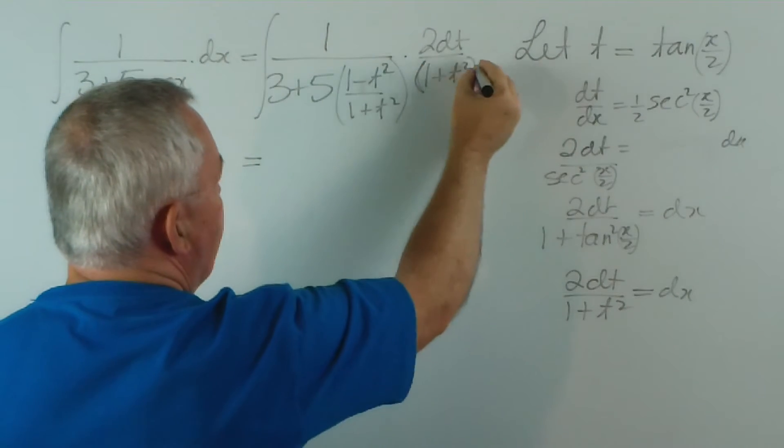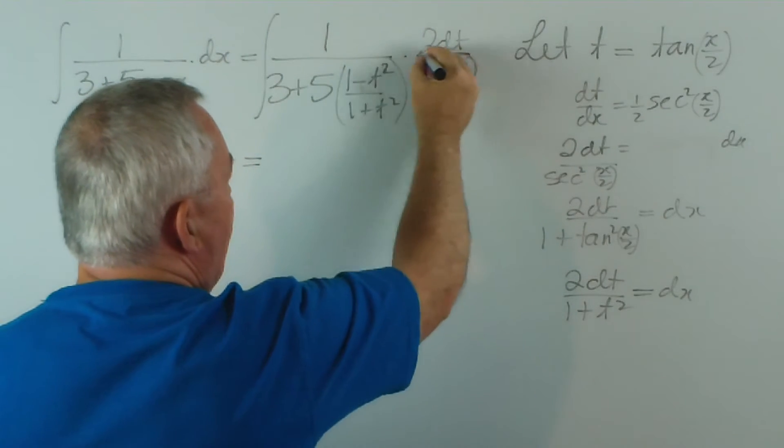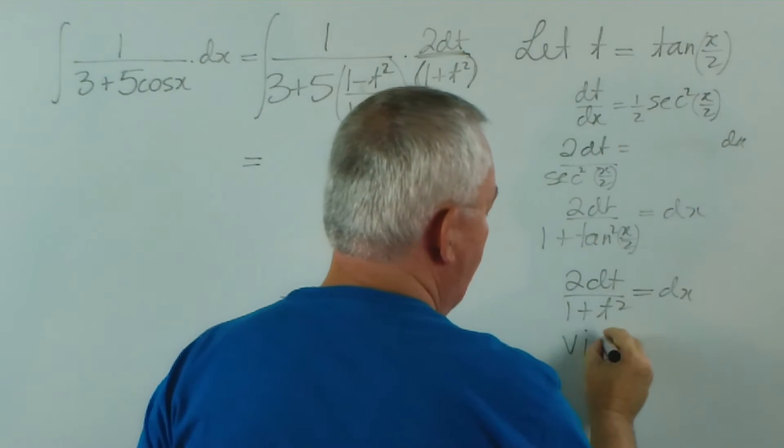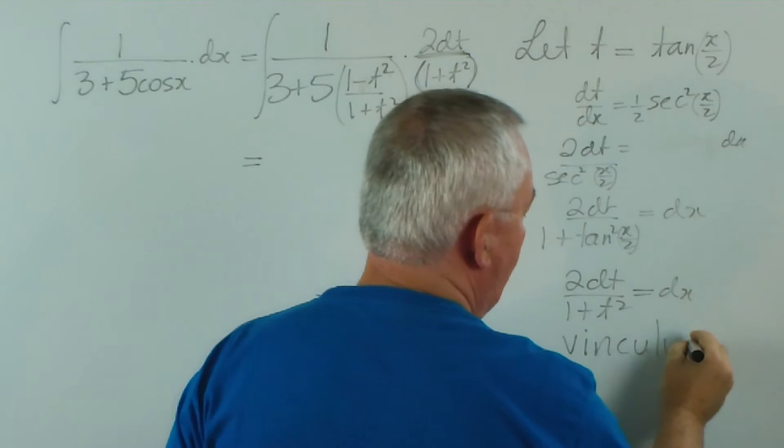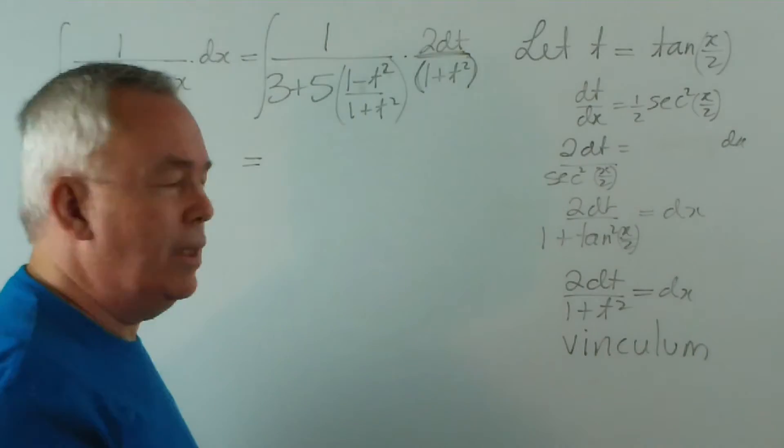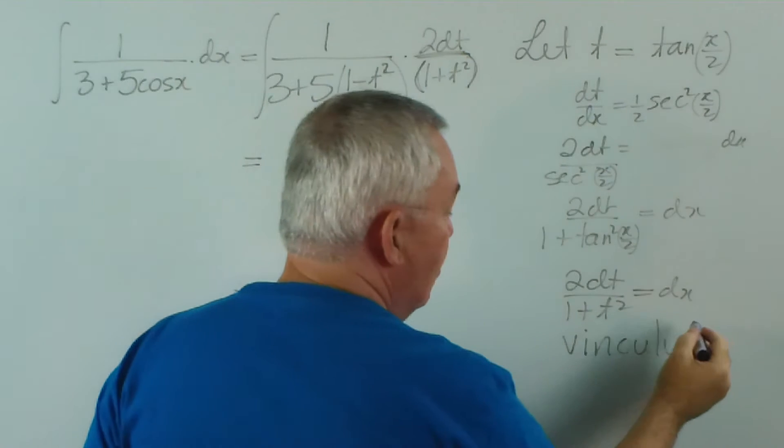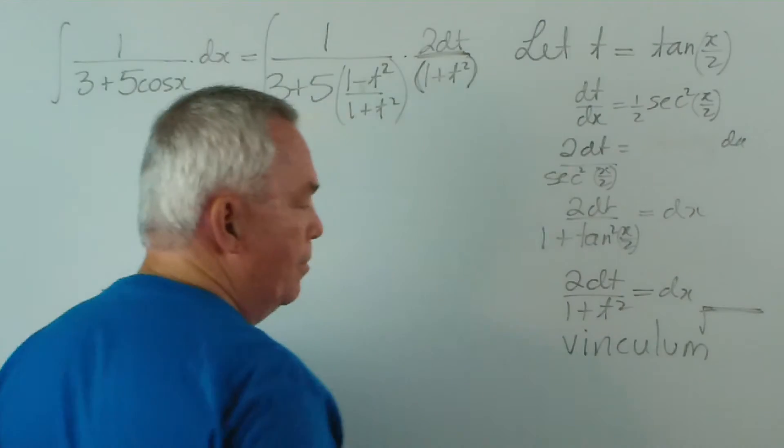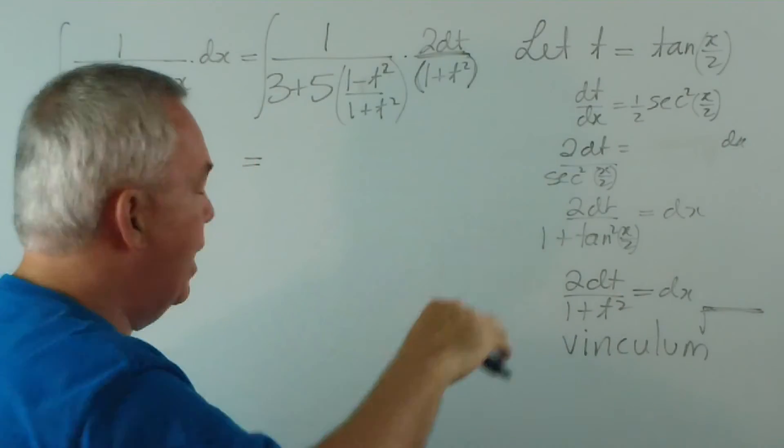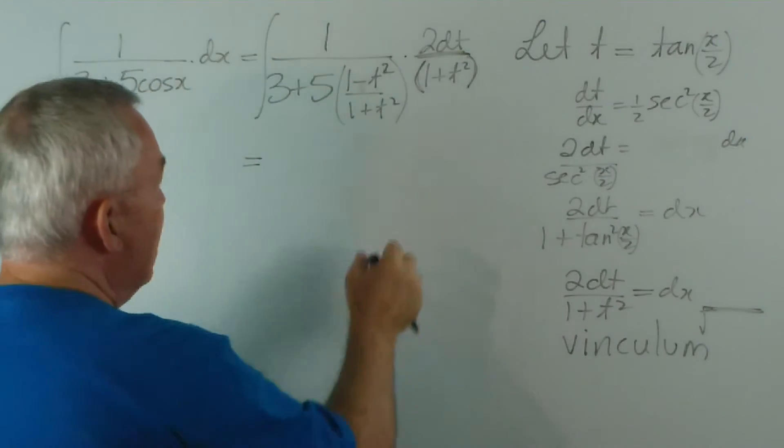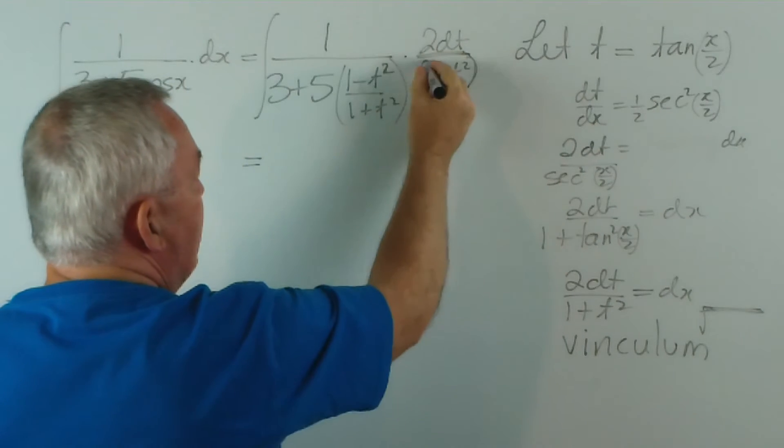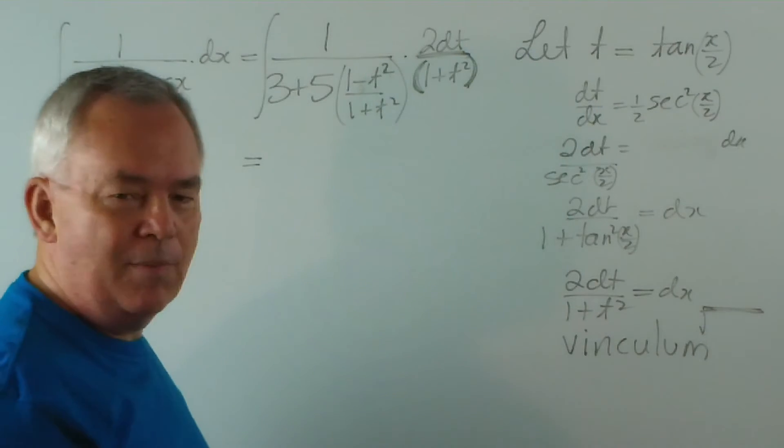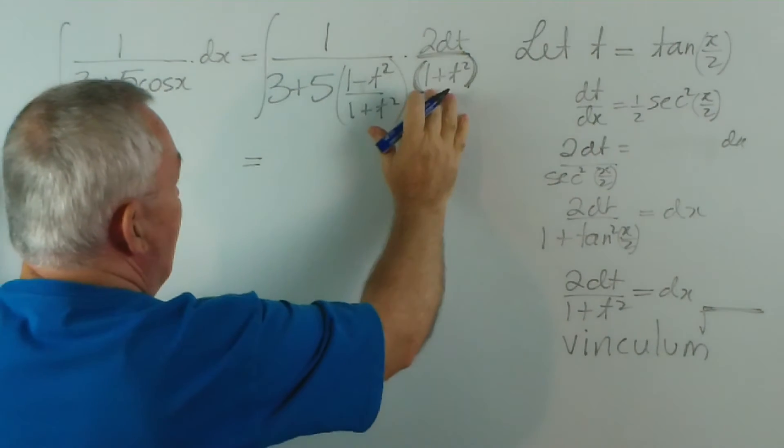Notice, by the way, I used parentheses here. Even though that bar, that vinculum, which it's called—if you want to show off somewhere—it's the Latin term for the bar in a fraction and also the bar in a radical sign. Not the whole radical, but just the bar part. It acts as a grouping symbol in its own right, but this is a psychological help. You reduce your risk of making silly mistakes by using it.